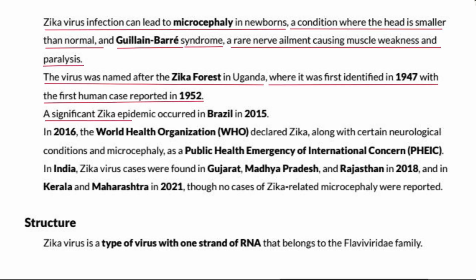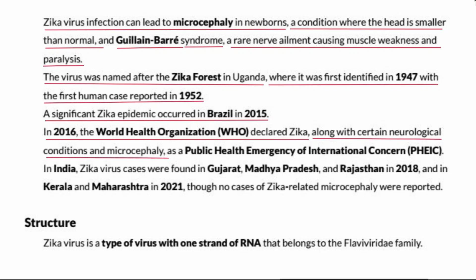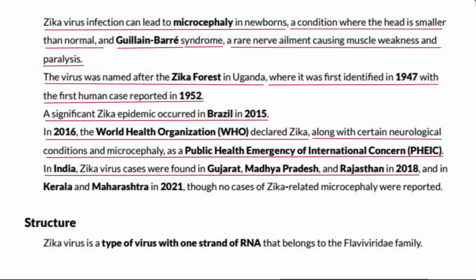A significant Zika epidemic occurred in Brazil in 2015. In 2016, the World Health Organization declared Zika, along with certain neurological conditions and microcephaly, a Public Health Emergency of International Concern (PHEIC). In India, Zika virus cases were found in Gujarat, Madhya Pradesh, and Rajasthan in 2018, and in Kerala and Maharashtra in 2021, though no cases of Zika-related microcephaly were reported.